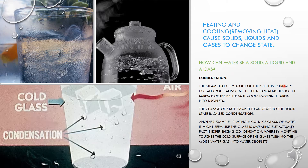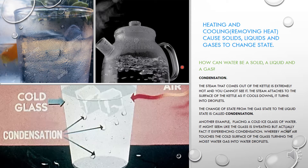The steam that comes out of the kettle is extremely hot and you cannot see it. The steam attaches itself to the surface of the kettle. The water is hot, but the top of the kettle, since it's not touching the water, is also exposed to cold air — making the surface a much colder temperature than the water itself. Because the steam is touching a cold surface, it changes temperature, causing it to change state into droplets, which is what we call the liquid state. So the change of state from gas — the steam — to the lid droplets, which is liquid, is called condensation.